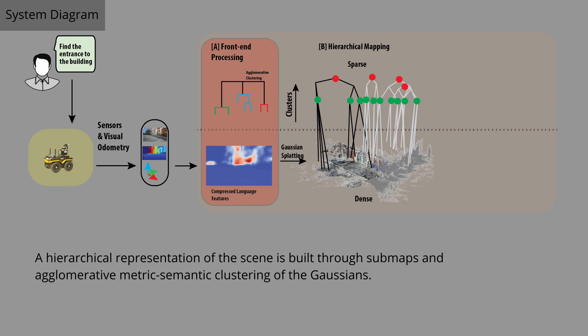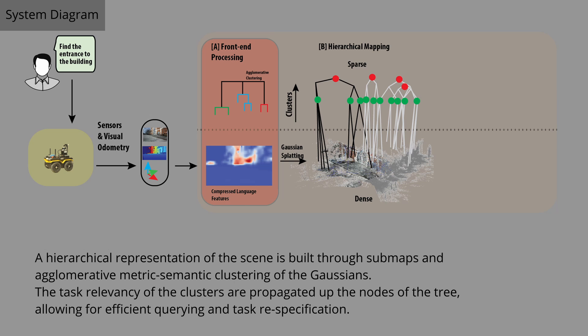A hierarchical representation of the scene is built through sub-maps and agglomerative metric-semantic clustering of the Gaussians. The task relevancy of the clusters are propagated up the nodes of the tree, allowing for efficient querying and task respecification.